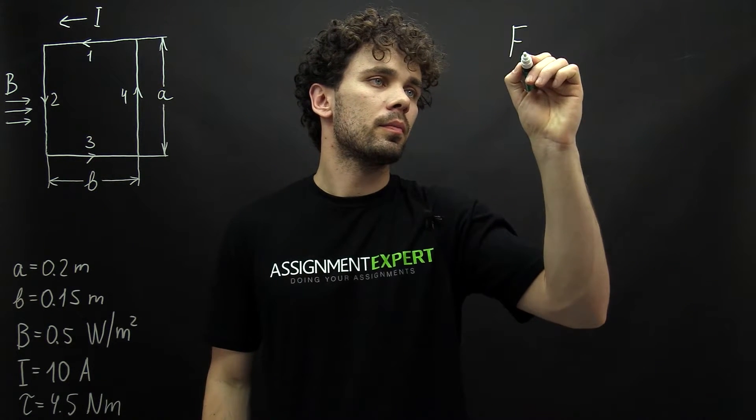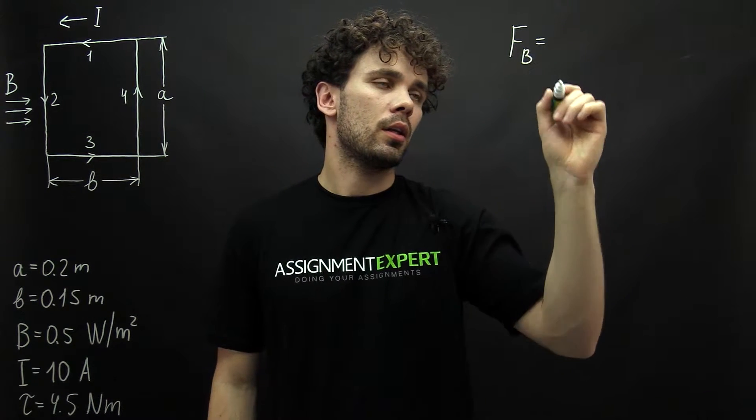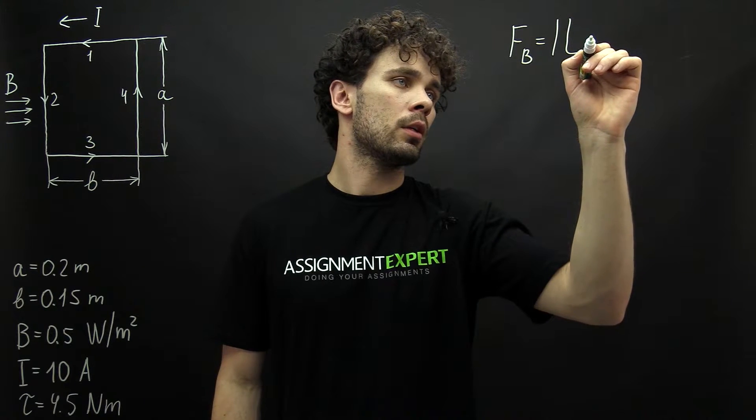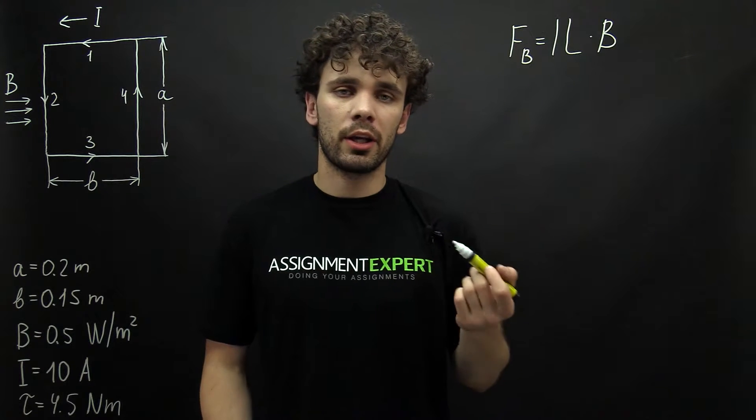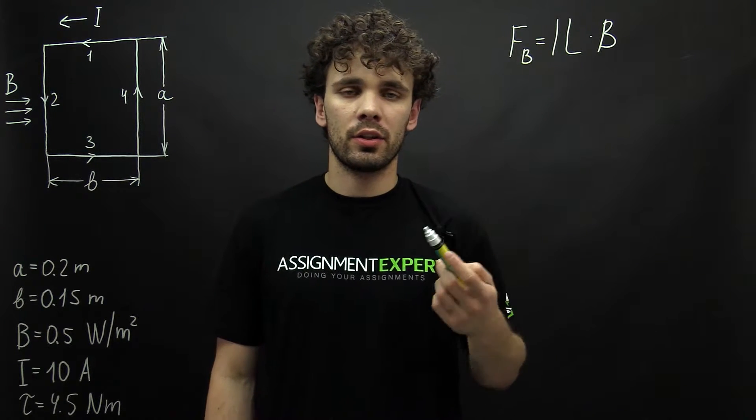FB equals I times L times B. Here FB is the magnetic force, I is the current inside of the coil.